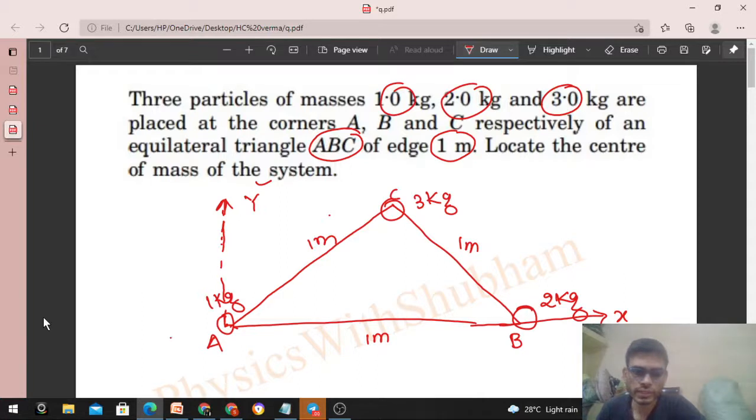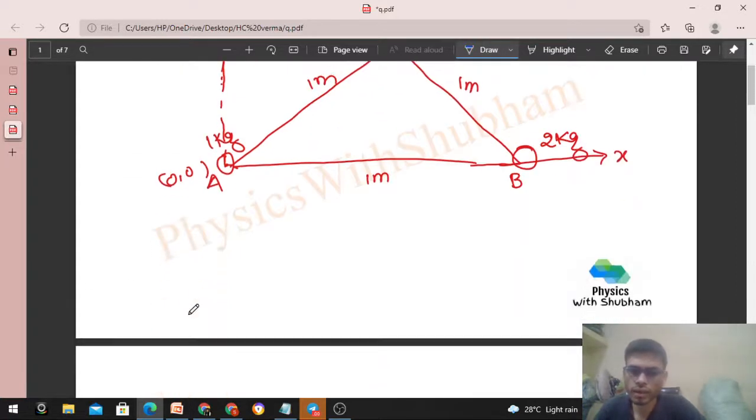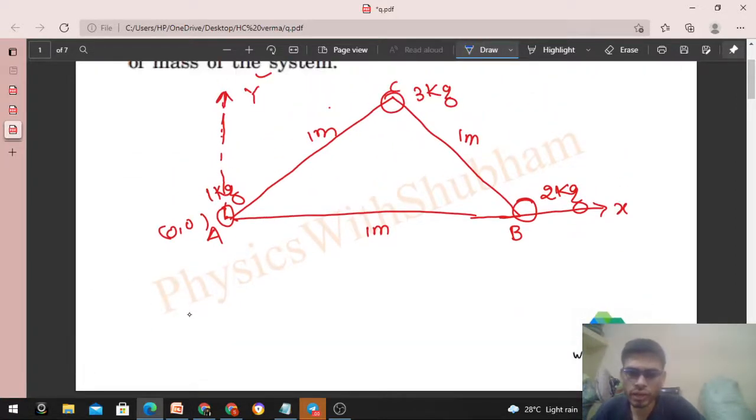First let's find the coordinates of all three particles. Point B's x-coordinate will be 1 meter, so x-coordinate will be 1 and y-coordinate will be 0.